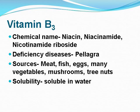Vitamin B3: its chemical name is niacin, niacinamide, or nicotinamide riboside. Deficiency disease: pellagra. Sources include meat, fish, eggs, vegetables, mushrooms, and tree nuts. Solubility: it is soluble in water.